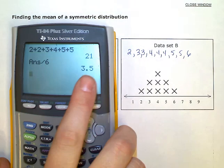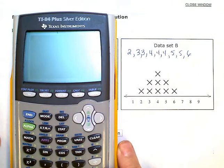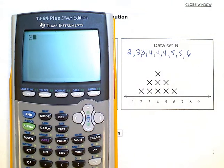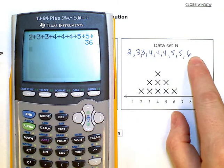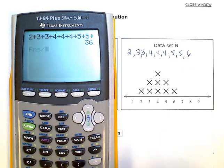So put my calculator over here this time. We're going to add up 2 plus 3 plus 3 plus 4 plus 4 plus 4 plus 5 plus 5 plus 6. That gives me 36. And then I had 1, 2, 3, 4, 5, 6, 7, 8, 9 data points. So I'm going to divide that by 9. And I get 4.